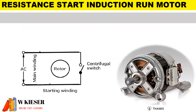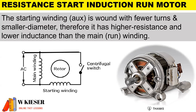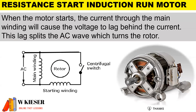In this illustration, we have a resistance start induction run motor. Looking at the circuit diagram, we have the main winding, the start winding, a centrifugal switch, and the rotor. These motors are mainly used for washing machines and have low starting torque. In terms of operation, the start winding has fewer turns and smaller diameter, giving it higher resistance and lower inductance than the main winding. When the motor starts, the current through the main winding causes the voltage to lag behind the current, which splits the AC wave and turns the rotor.